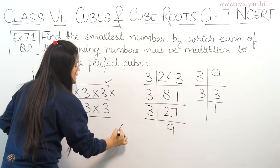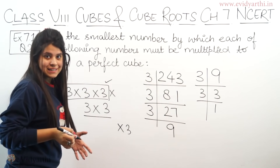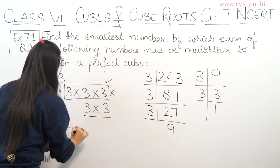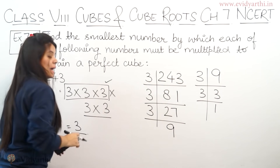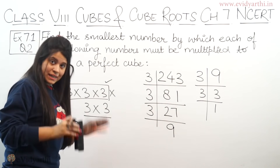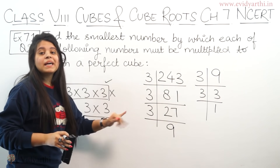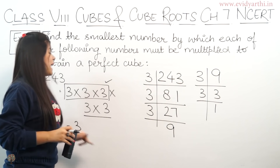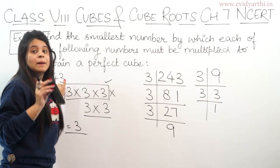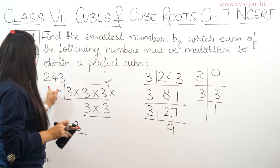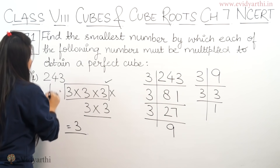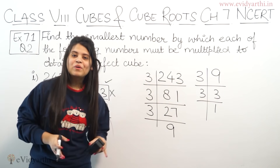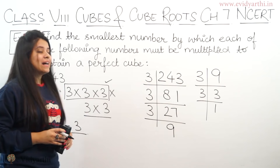Why? Because if one more 3 is multiplied, the second triplet would be completed. So the smallest number that needs to be multiplied is 3. If we multiply 243 by 3, the resulting number will be a perfect cube. So this was part number one.